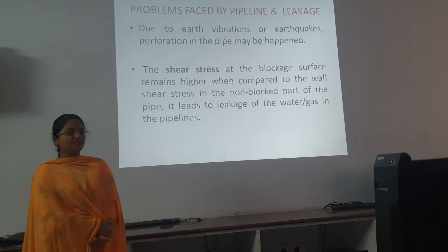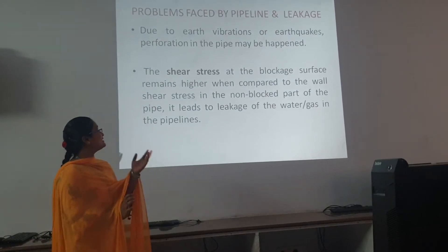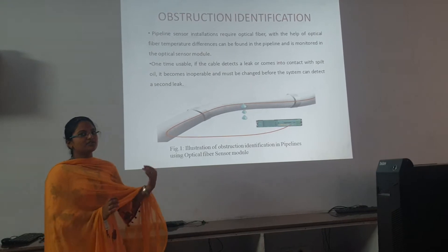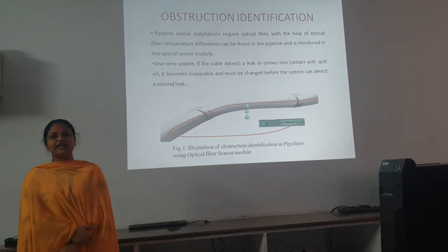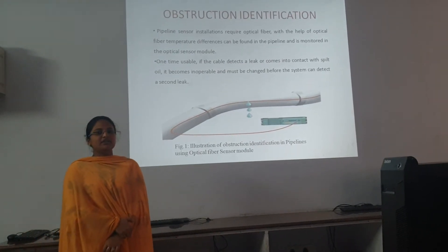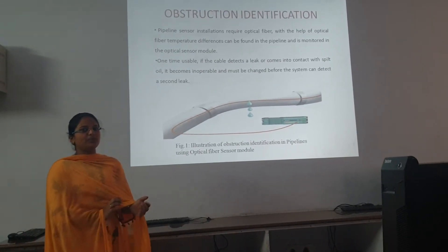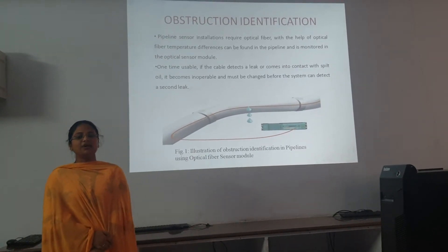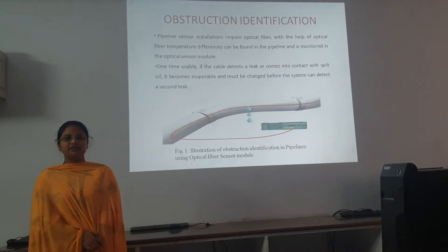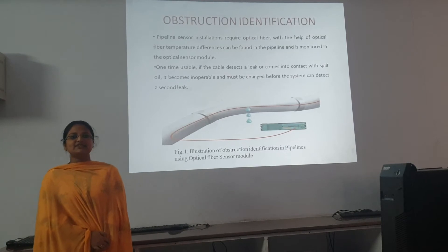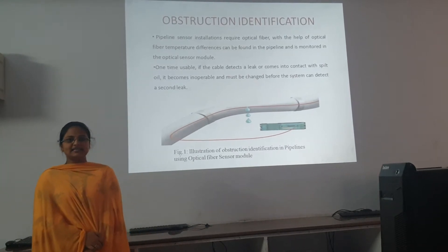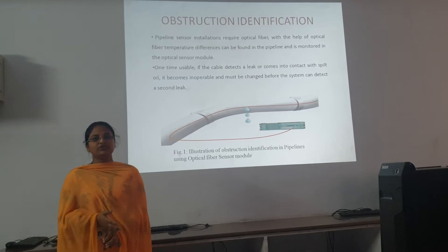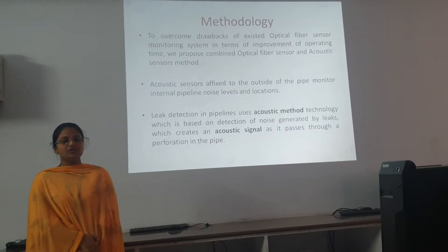The next topic is obstruction identification. The figure shows the obstruction identification in the pipeline. We are using optical fiber — whenever leakage occurs, the optical fiber light intensity is reduced. Once the leakage occurs, we have to reconstruct or reuse the optical fiber cable.